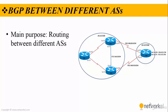The main purpose of BGP is to perform routing between different autonomous systems without a loop. As you can see in our figure, we have two autonomous systems, and if you want to share routes between these two autonomous systems, we can use BGP.